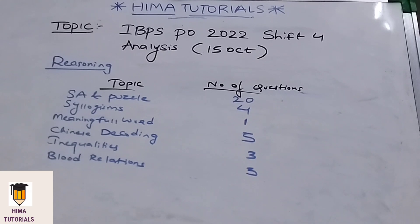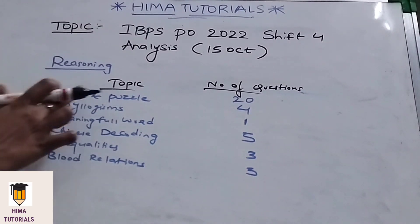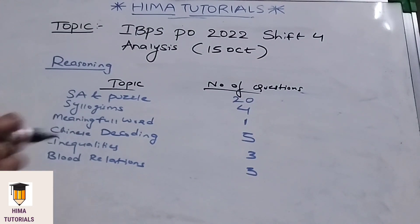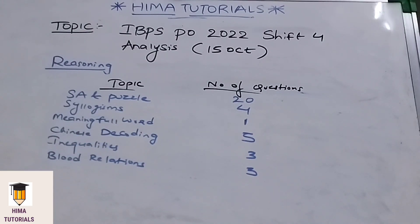The overall reasoning section is easy to moderate. The topics and number of questions asked: seating arrangement and puzzle — 20 questions total; syllogisms — 4 questions; meaningful word — 1 question; Chinese decoding — 5 questions; inequality — 3 questions; and blood relations — 3 questions. That is about the reasoning section.